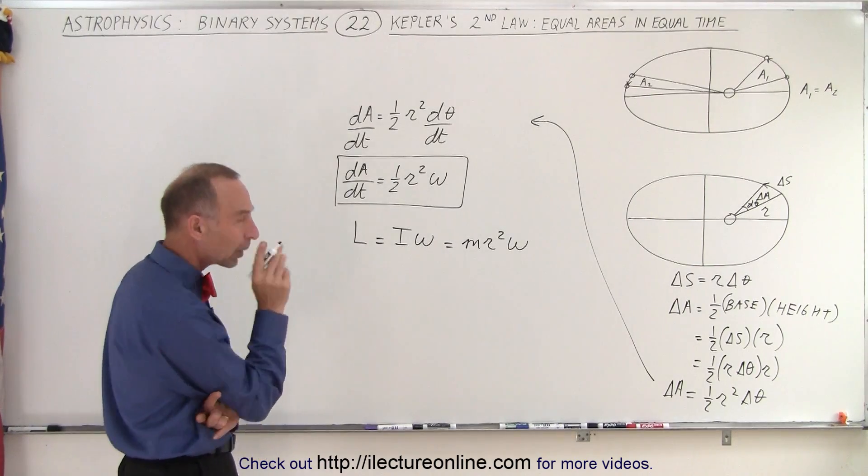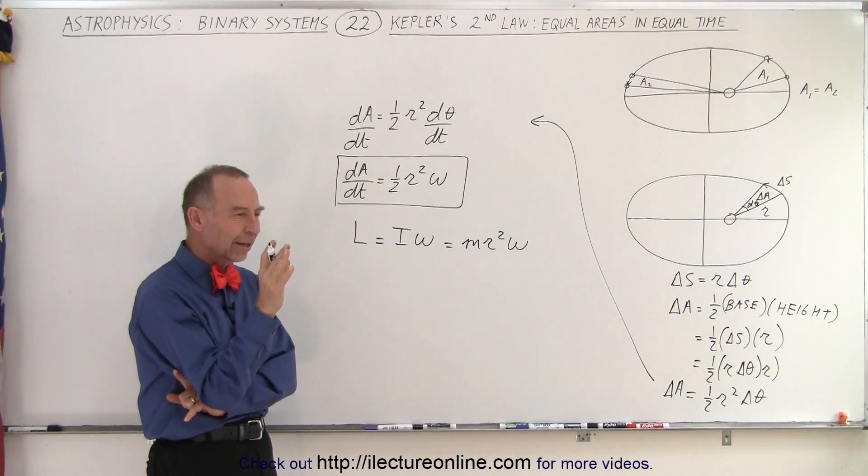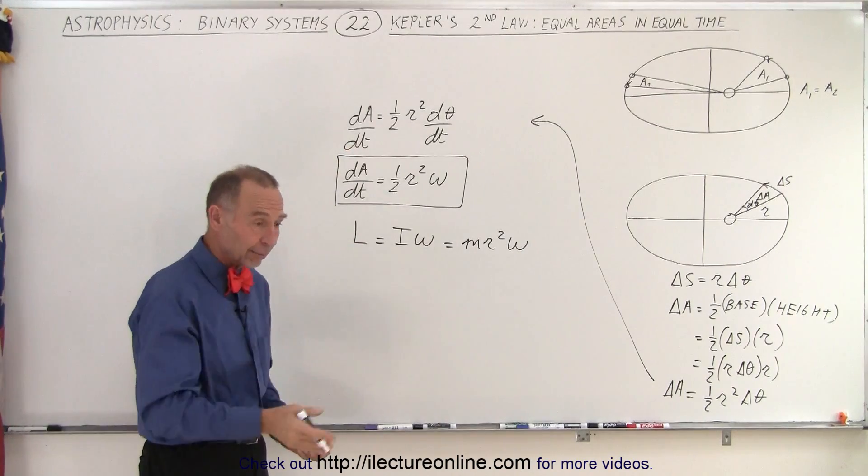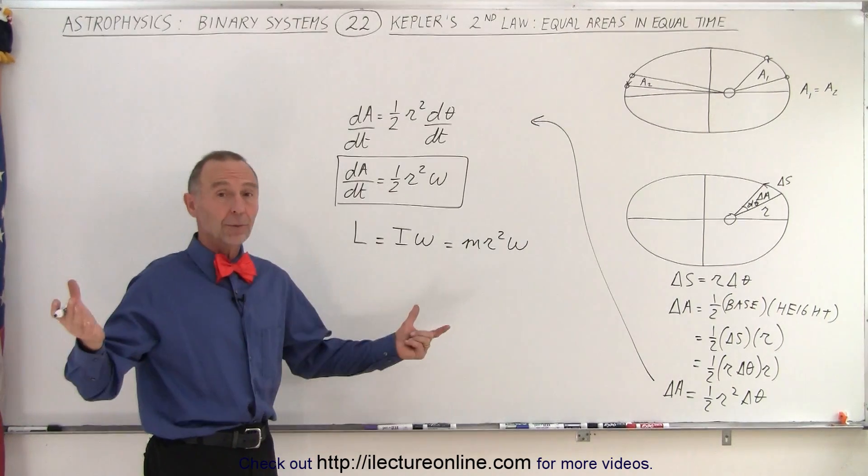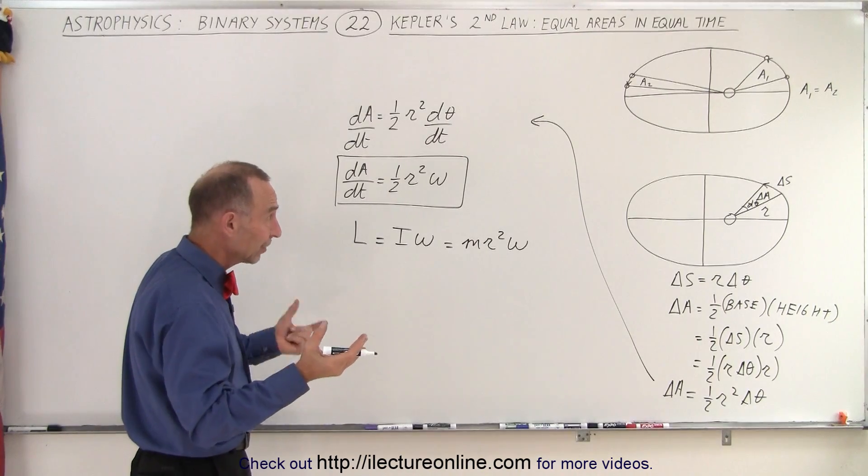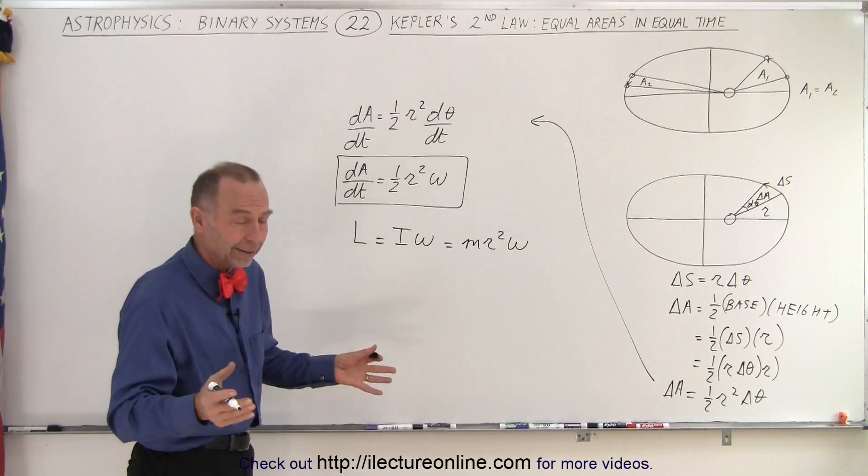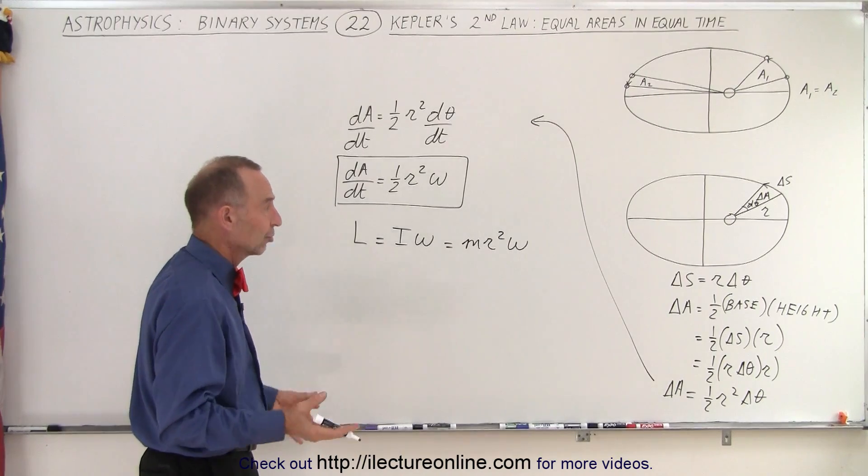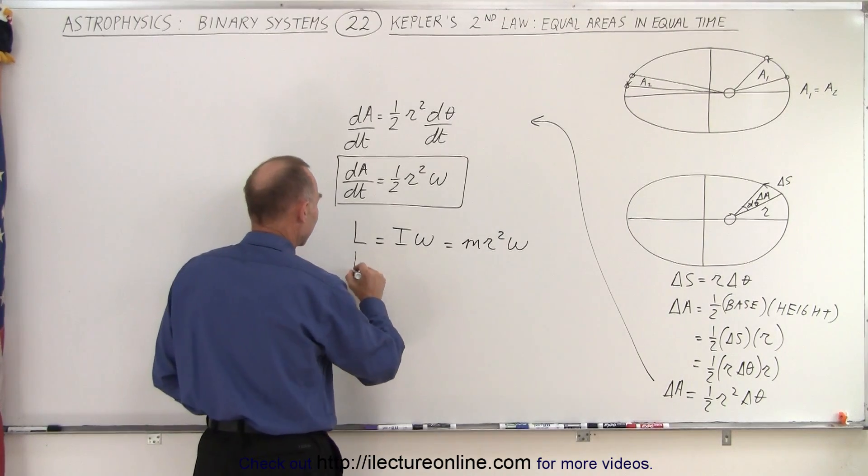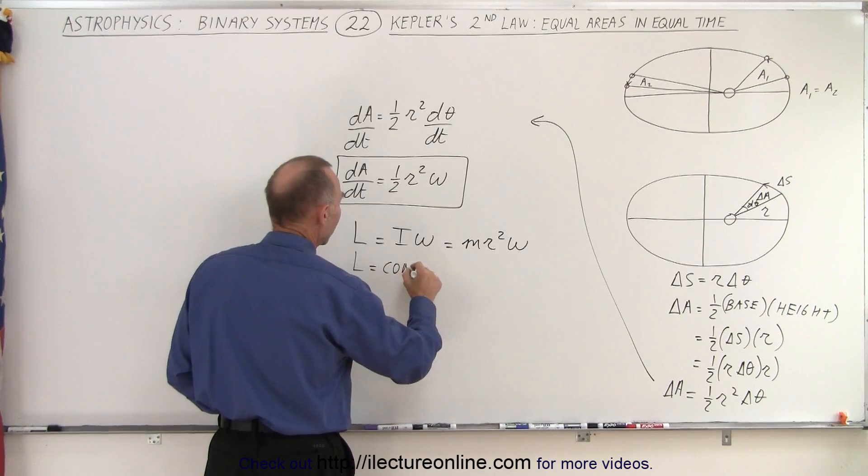Now, notice that an object that's moving around, like a planet moving around the sun, the angular momentum must be constant, because any object that's moving around in a circle or elliptical orbit, the angular momentum simply cannot change, so we know that by definition, this must be a constant.